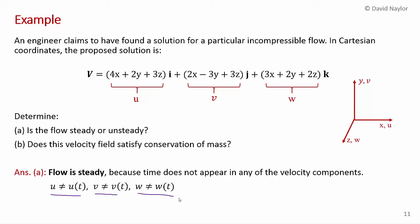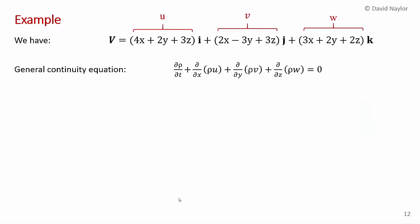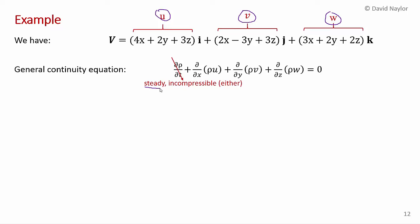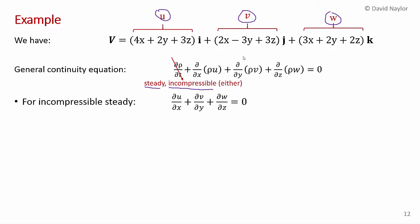To check conservation of mass, we apply the continuity equation. Since the flow is steady and incompressible, the time derivative term vanishes, and we simplify to the incompressible form: ∂u/∂x + ∂v/∂y + ∂w/∂z = 0. Now we evaluate the derivatives: u = 4x + 2y + 3z, so ∂u/∂x = 4; v = 2x − 3y + 3z, so ∂v/∂y = −3; w = 3x + 2y + 2z, so ∂w/∂z = 2.